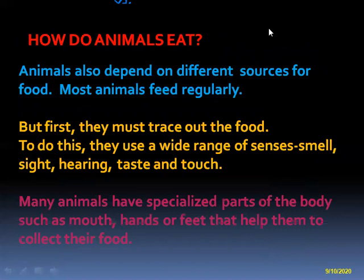How do animals eat their food? Animals depend on different sources for their food. Most animals feed regularly, but first they must trace out where the food is available — they should search first. To do this they use different sense organs like smell, sight, hearing, taste, and touch. Many animals have specialized body parts such as mouth, hands, or feet that help them collect their food.